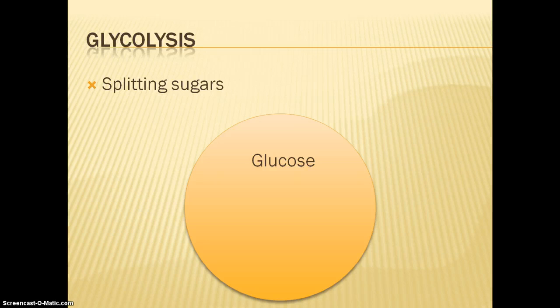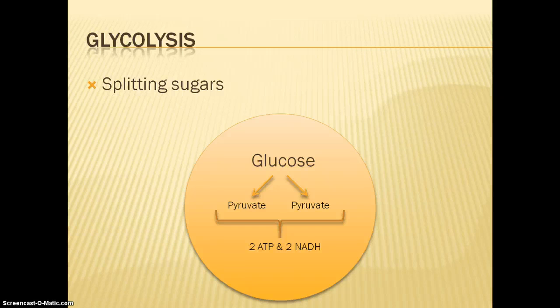Glycolysis is essentially splitting or lysing sugars. A glucose molecule is broken down into two 3-carbon pyruvate molecules, which makes sense given glucose's chemical formula, C6H12O6. This produces a net gain of two ATP and two NADH molecules. The ATPs are generated through substrate-level phosphorylation, in which an enzyme known as a kinase transfers a phosphate to ADP, changing the diphosphate to a triphosphate.